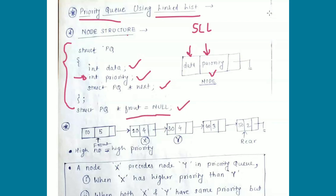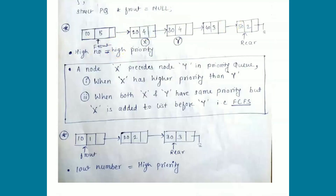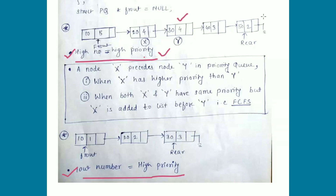When implementing priority queue using a linked list, there are two possibilities with respect to the priority number. The first possibility is high number high priority, and the second is low number high priority. You need to keep in mind which convention you want to use. This priority queue is based on high number high priority.